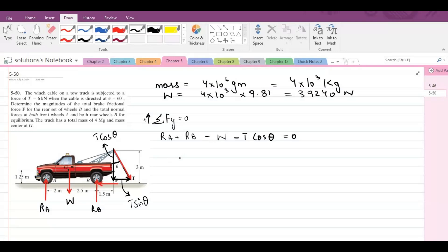So here we have negative T cos theta as well equals to 0. Now we can substitute some of the values. So our equation becomes RA plus RB equals to the weight that is 39,240 newtons plus the T cos theta that is T is 6000 and cos 60 degrees. So RA plus RB becomes 42,240. So this is our first equation.